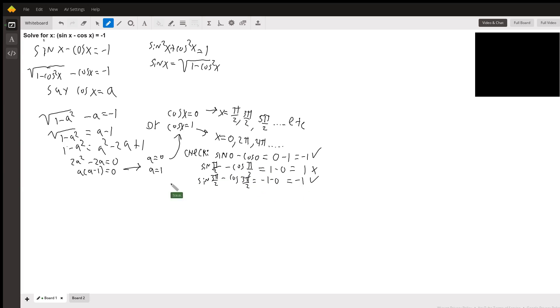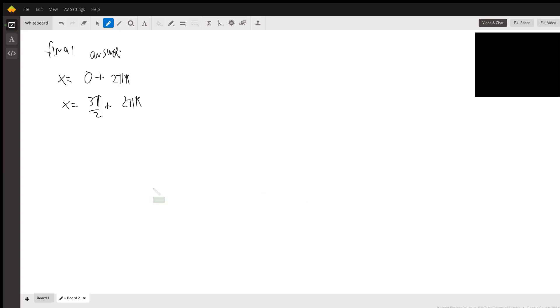And zero checks out, so our final answer is basically zero and three pi over two plus any interval of two pi k, or two pi times k, where k is just an integer.